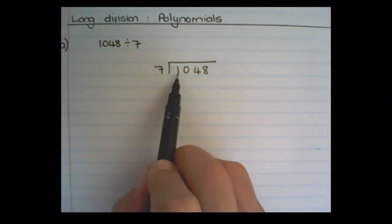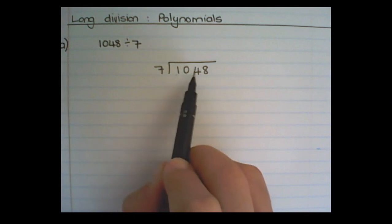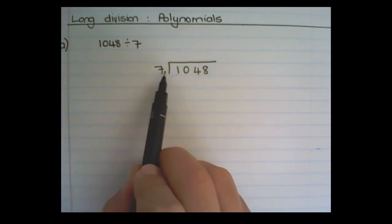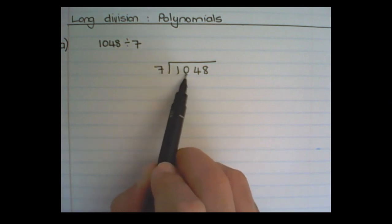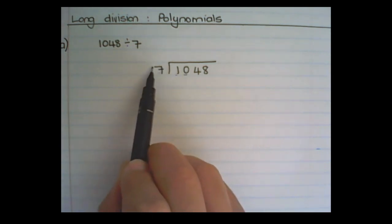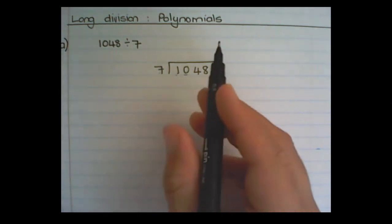So I work my way through the digits from left to right. 7 goes into 1, 0 times. Then I go to the next digit and combine it. So 7 goes into 10, once.